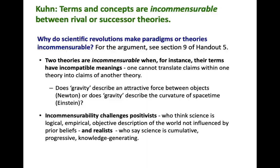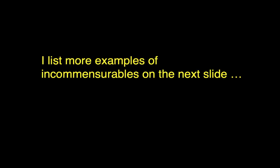On Kuhn's view, terms and concepts and theories are incommensurable — incompatible — between rival or successor theories. Why do scientific revolutions make paradigms or theories incommensurable? Two theories are incommensurable when their terms have incompatible meanings — you can't translate claims within one theory into claims of another. For instance, does the term gravity describe an attractive force between objects? That was Newton's idea. Or does gravity describe the curvature of space-time? That's Einstein — very different. Incommensurability challenges positivists — who think science is logical, empirical, objective, describing the world, uninfluenced by prior beliefs — and realists, who say science is cumulative, progressive, and knowledge-generating.